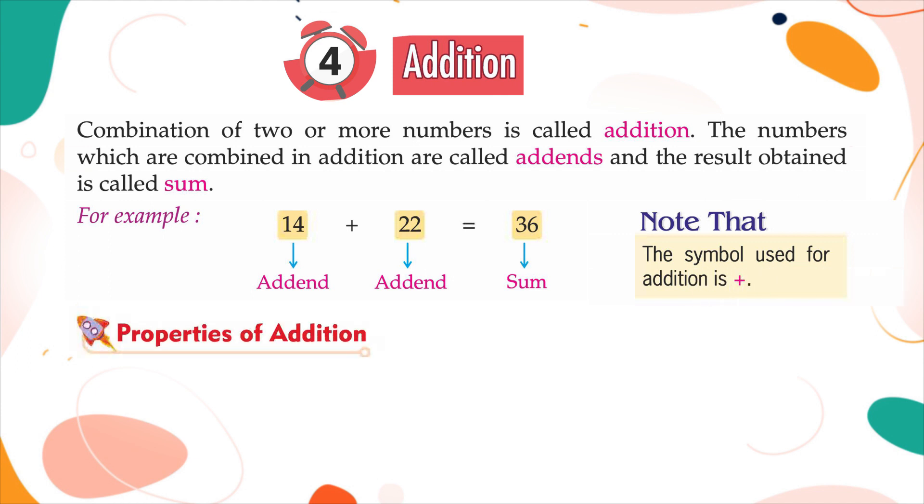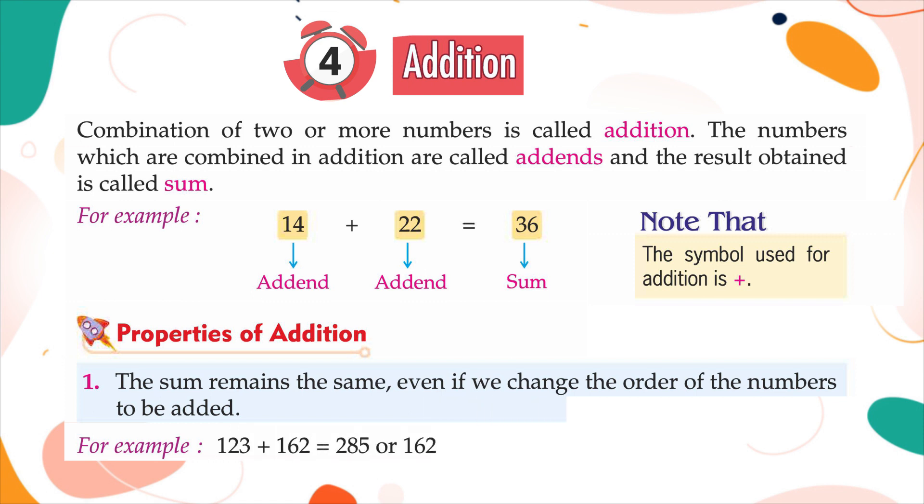Properties of addition. One: The sum remains the same even if we change the order of the numbers to be added. For example, 123 plus 162 is equal to 285, or 162 plus 123 is equal to 285.